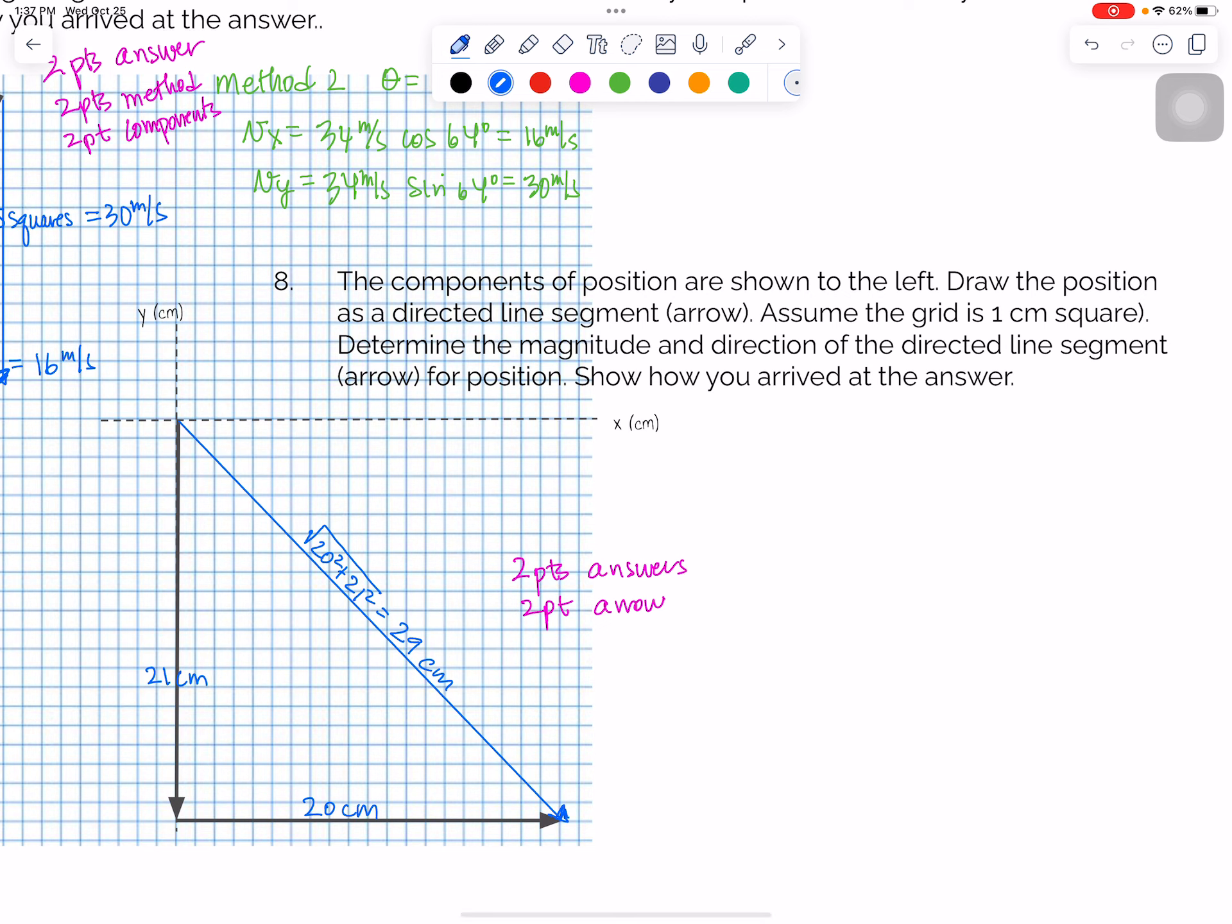And then you can either use trig. I actually just used my protractor and I got, this was 44 degrees. So you had two points if you had an arrow. So the line and the arrowhead. And then two points for getting 29 centimeters and this angle.